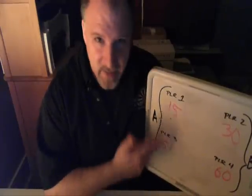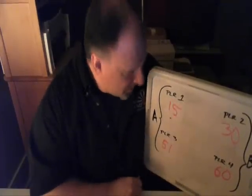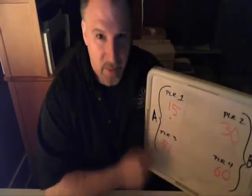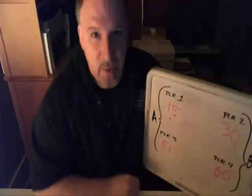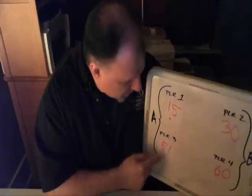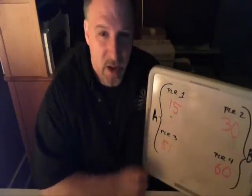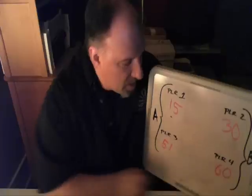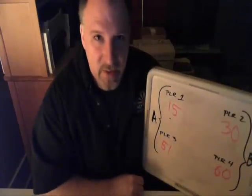To illustrate that for you, I've got a sample score here. We've got Team A, Team B, Player 1 and 3 on Team A, Player 2 and 4 on Team B. Player 1 has got 15 points, Player 3 has got 51 for a combined score of 66. Player 2 has got 30 and Player 4 has got 60 for a combined score of 90.